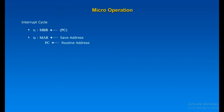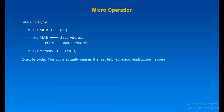Then the MAR is loaded with the address at which the contents of the PC are to be saved, and the PC is loaded with the address of the start of the interrupt processing routine. These two actions may each be a single micro-operation. The final step is to store the MBR, which contains the old value of the PC, into memory. The processor is now ready to begin the next instruction cycle — the execute cycle.